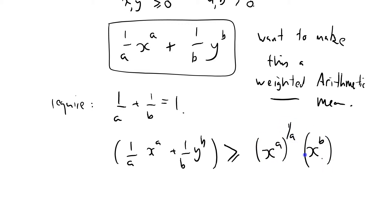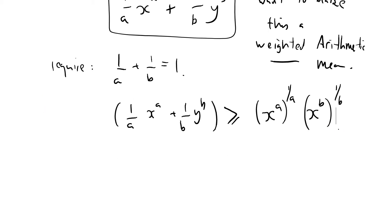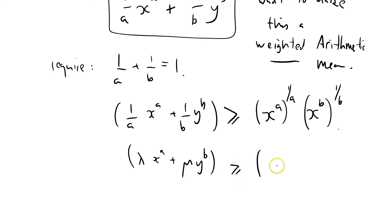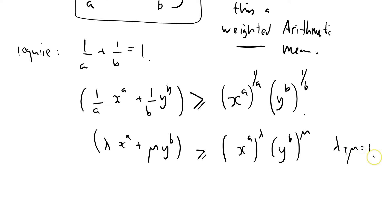To make it weighted, we weight it by 1 over A and 1 over B. Let me write that in a slightly different format: this is λ·X^α + μ·Y^B ≥ (X^A)^λ · (Y^B)^μ, where λ + μ = 1 and they're both positive. All I'm doing is having this inequality with the special case that λ = 1/A and μ = 1/B.